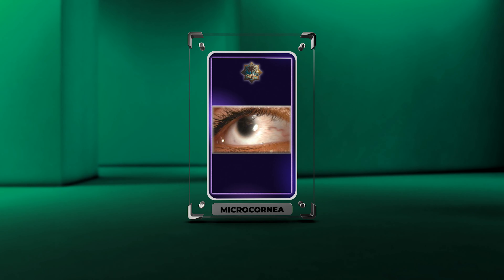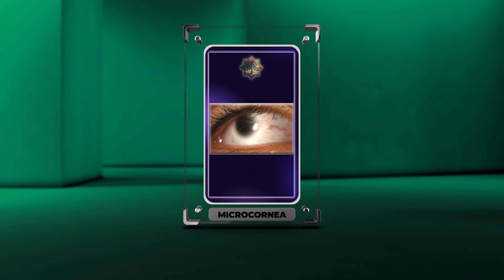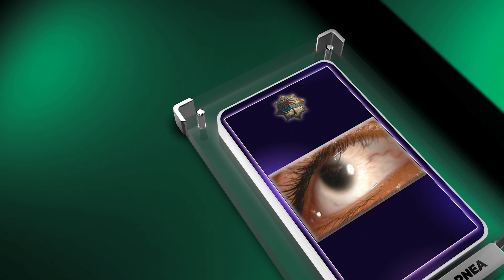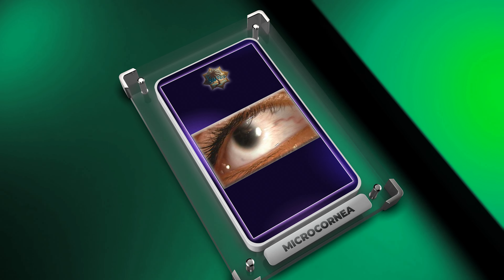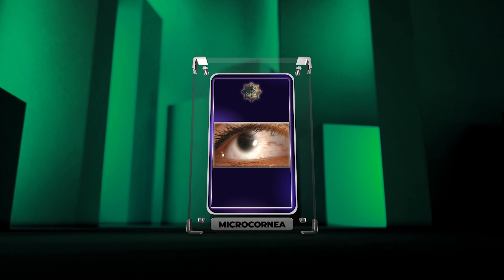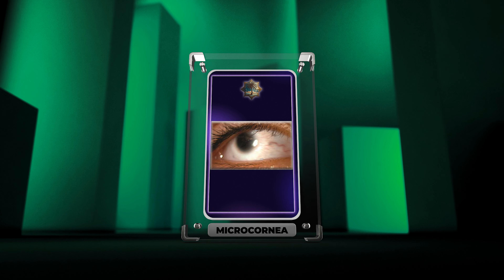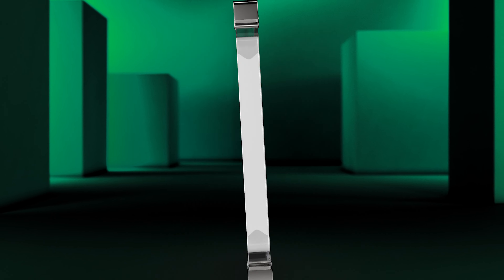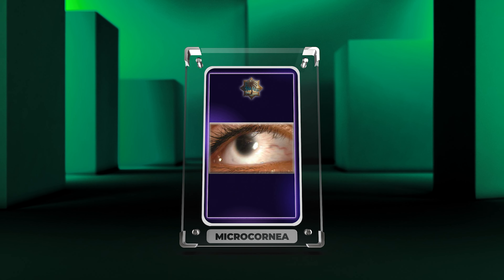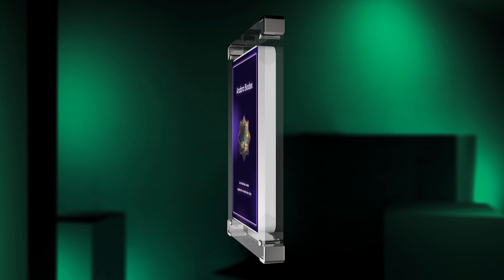Microcornea is a condition characterized by abnormally small corneas. This video will cover its causes, associated complications, treatment options, and long-term outcomes, providing medical students with a comprehensive understanding of the condition.